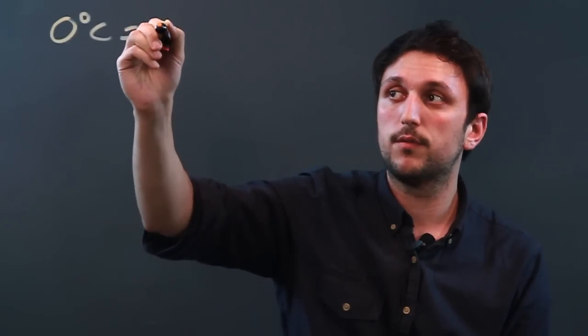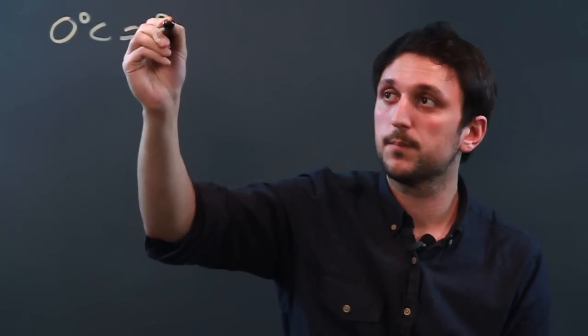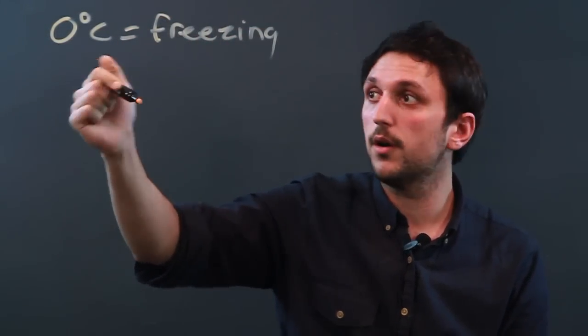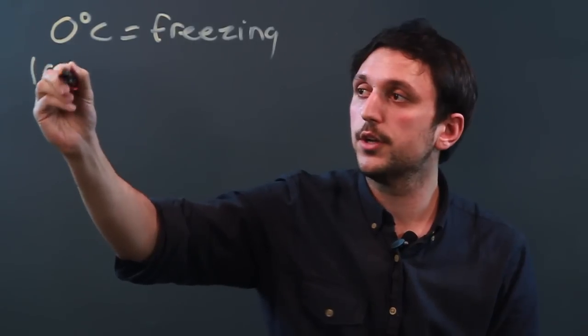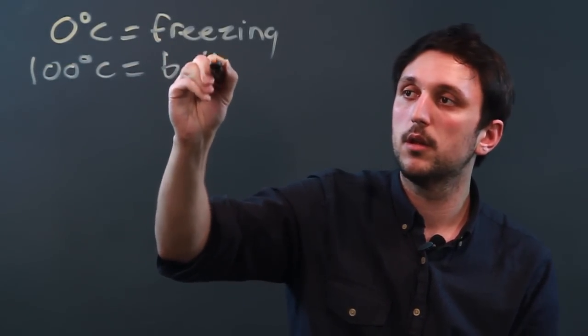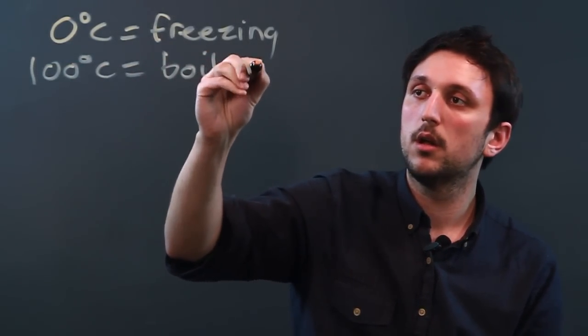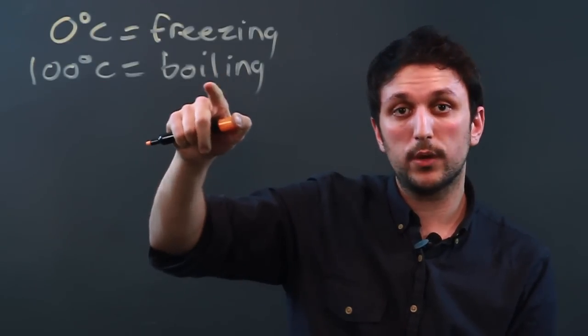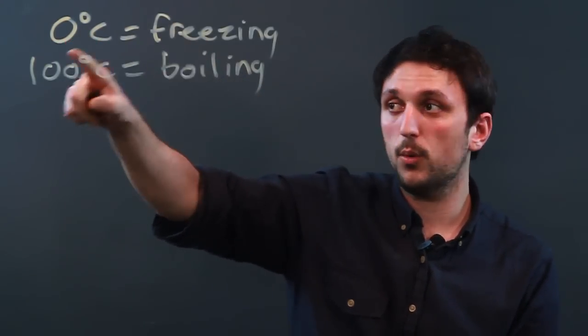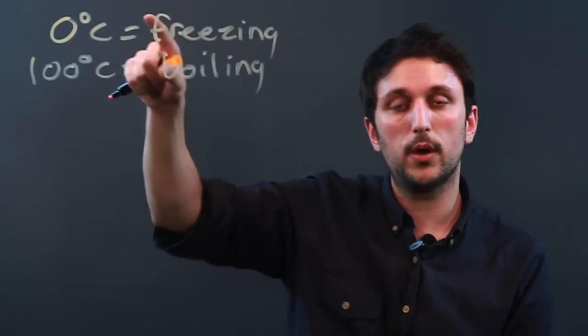Now Celsius is really based on water, because zero degrees Celsius equals freezing — the freezing point of water — and 100 degrees Celsius is the boiling point. So really, all degrees past that are based on the difference between the freezing point and the boiling point of water.